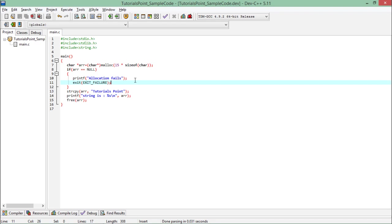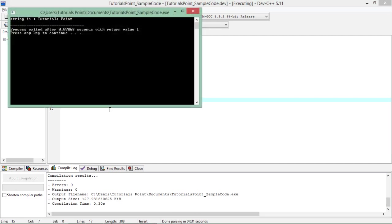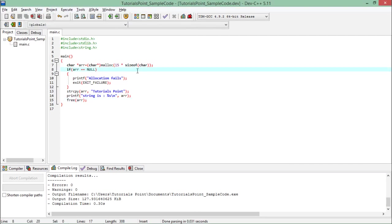I check if arr equals null. If so, I print 'allocation fails' and use EXIT_FAILURE to terminate the program. If it's not null, I call strcpy from string.h and assign the value 'tutorialspoint' to that location. After printing the value, I free the space using the free function. When executed, you can see the string is 'tutorialspoint'. Apart from malloc, I can also use calloc.